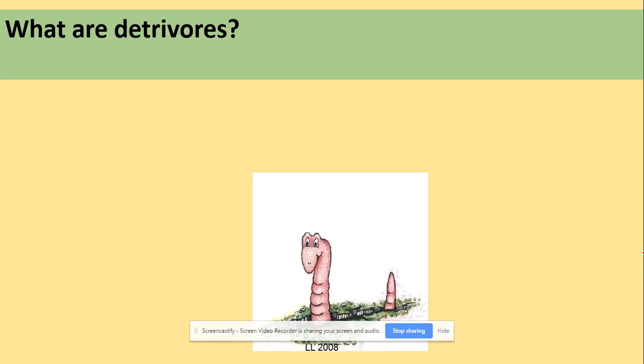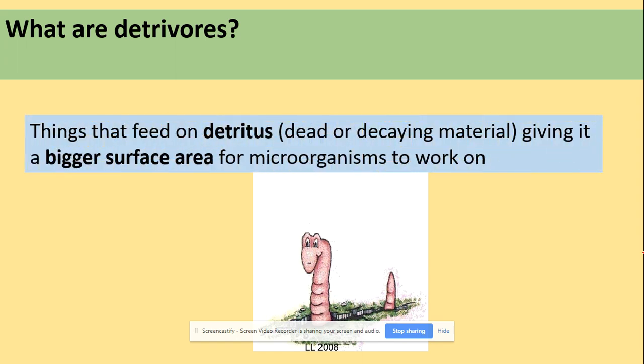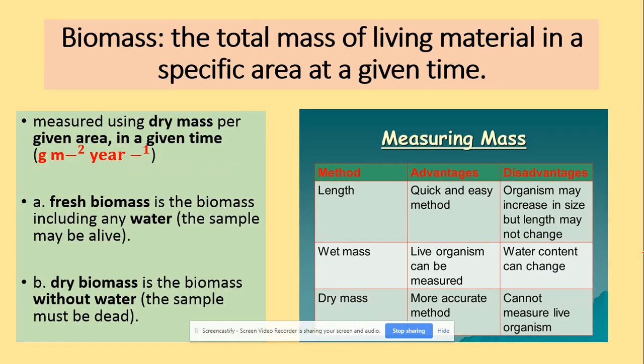What are detritivores? These are organisms that feed on detritus — dead or decaying material — breaking it into smaller pieces and giving a greater surface area for microorganisms to work on.